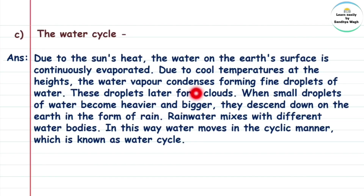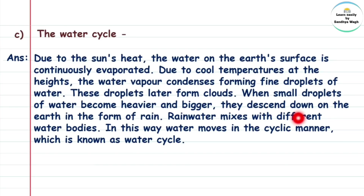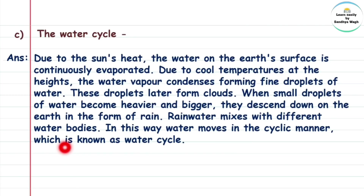Water vapor condenses forming fine droplets of water. These droplets later form clouds. When small droplets of water become heavier and bigger, they descend down to the earth in the form of rain. Rain water mixes with different water bodies. In this way, water moves in a cycle manner, which is known as the water cycle.